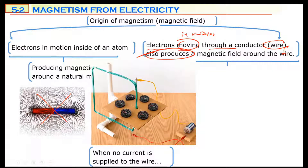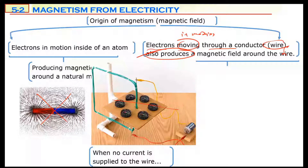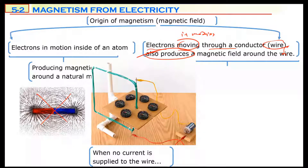Look at this example. This picture shows a wire that initially has no electric current. No electric current is given. Look at the direction of the compass needles. All compass needles are pointing in the same direction — they are pointing in the direction of the Earth's magnetic field. So Earth's magnetic field at this location is like that. The compass needle always shows the direction of the magnetic field at that point.